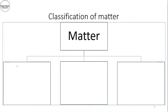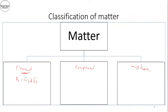Classification of matter: matter is classified into element, compound, or mixture. In the case of an element, it contains one type of atom. Examples would be hydrogen, oxygen, or iron. Hydrogen is composed of two hydrogen atoms, oxygen contains two oxygen atoms, while iron contains one iron atom. Everything written in the periodic table is actually an element.